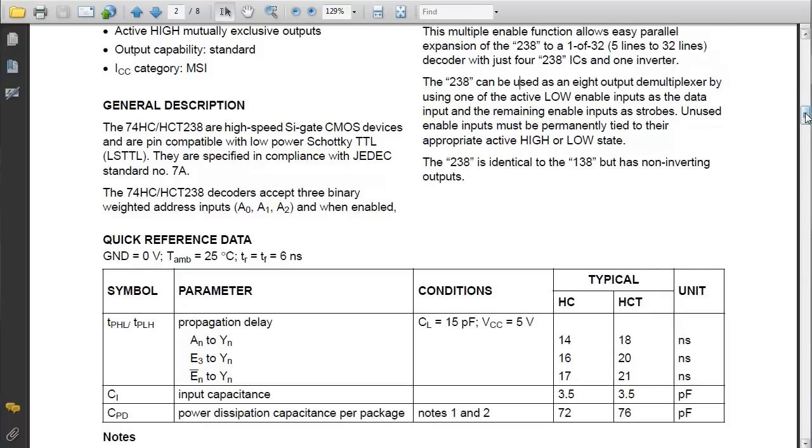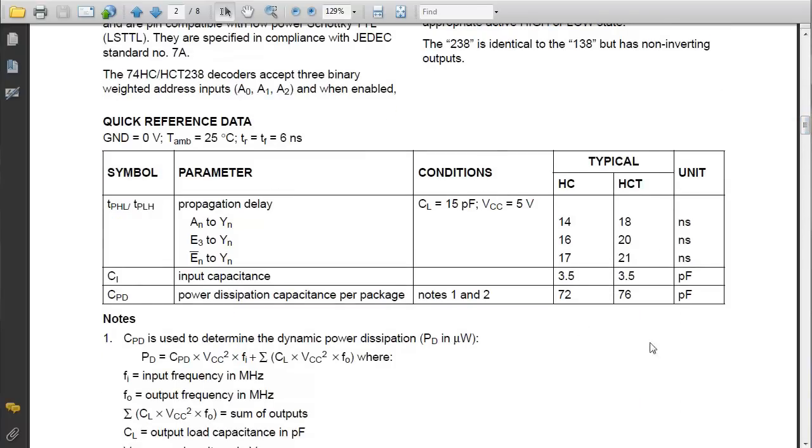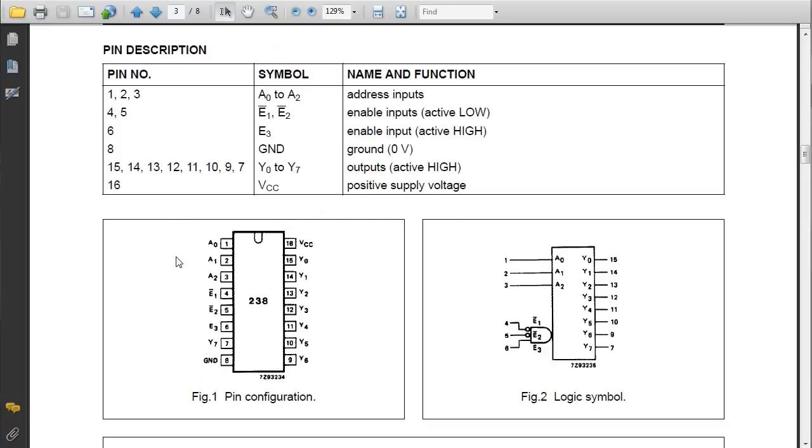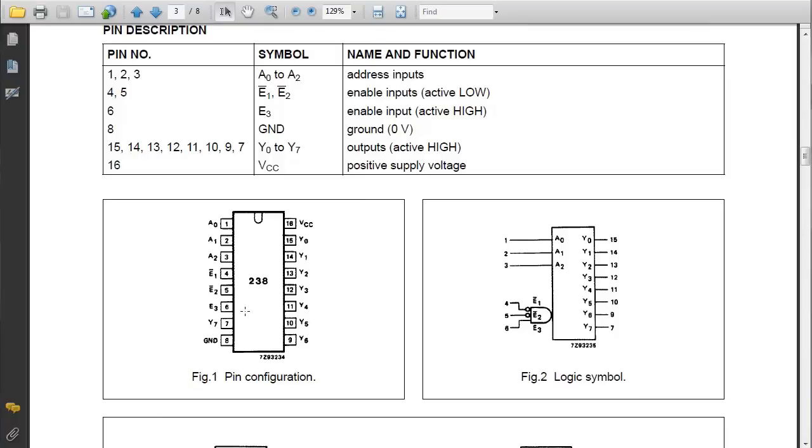There is some more data here about the chip in terms of its power characteristics. We are more concerned at the moment with the fundamentals of the chip such as the pin configuration. Here we have three input pins on pins 1, 2 and 3. These are A0, A1, A2. Here are our enable pins. There is the last output pin, the eighth output pin. We have our ground, our VCC and here are our seven output pins.